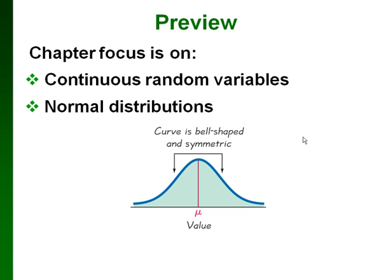For this chapter, the focus is on continuous random variables instead of the discrete random variables we talked about in Chapter 5. Mostly we are going to talk about normal distributions. A normal distribution has that bell-shaped curve that we've talked about before. It's symmetric, so the right half is exactly like the left half, and in the very middle of the distribution is the mean, which we're going to use the symbol mu for.